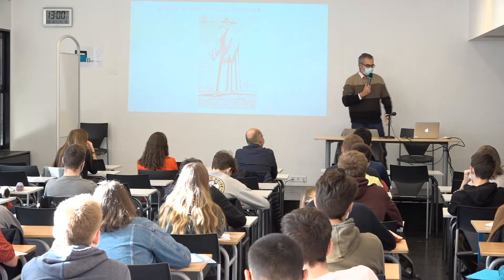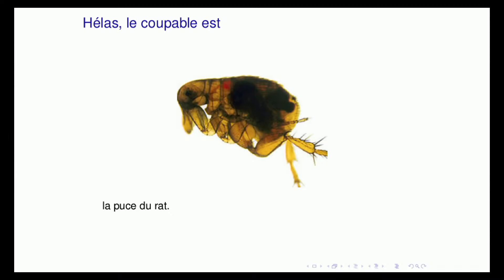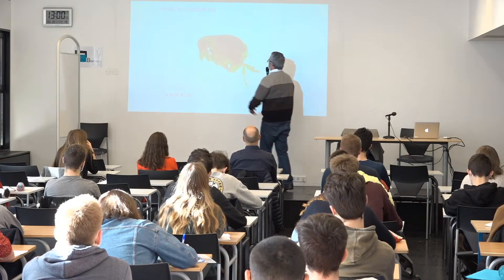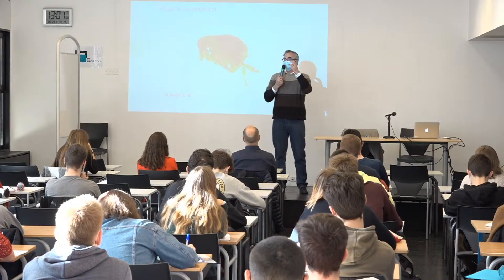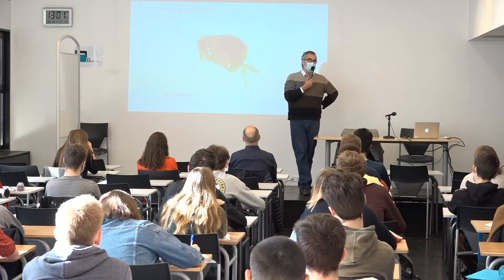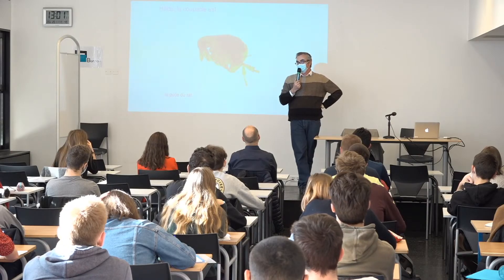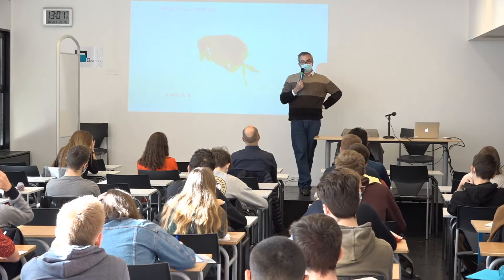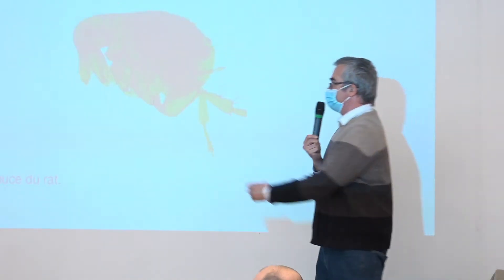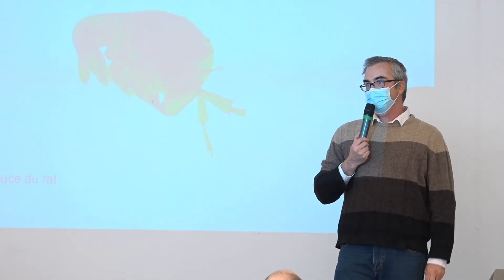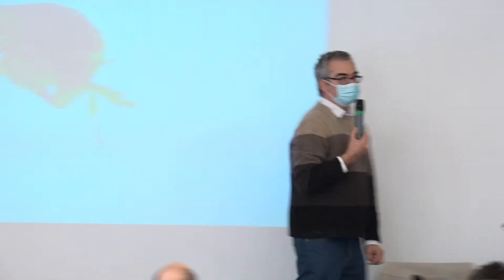Les biologistes ont mené l'enquête et le coupable de la peste, c'est la puce du rat. Les puces mordent et pompent du sang pour se nourrir. La puce du rat est coupable parce qu'elle a une malformation au niveau de sa trompe : avant de pouvoir pomper du sang, elle est obligée d'en régurgiter une partie. Quand elle a mordu quelqu'un de contaminé et qu'elle mord quelqu'un de sain derrière, elle lui injecte la peste. Elle s'attaque aux hommes quand elle a exterminé les rats — donc la meilleure dératisation possible, c'est une bonne épidémie de peste.